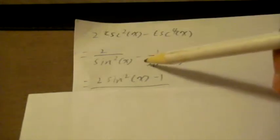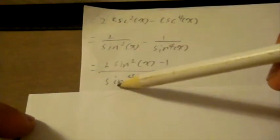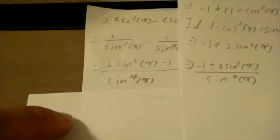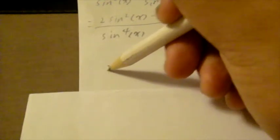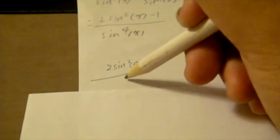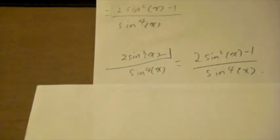Then we're going to subtract them, so it will become 2 sine squared x minus 1, all over sine to the 4th x. Does it look familiar? If we put these two together you can see they're all the same — just the numbers flipped around. So writing out the final proof: 2 sine squared x minus 1 over sine to the 4th x equals the left side. And that completes the first proof.